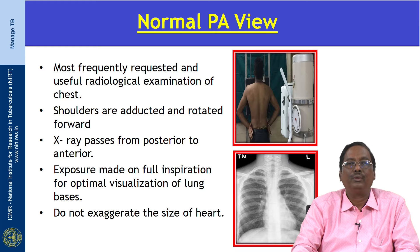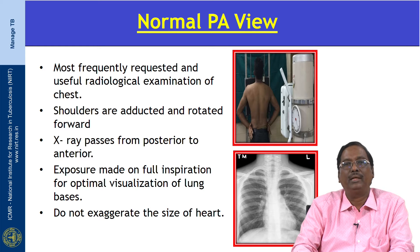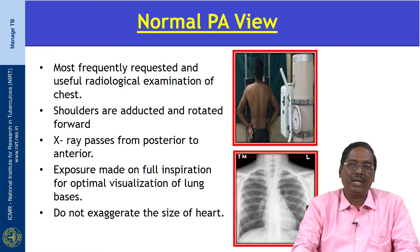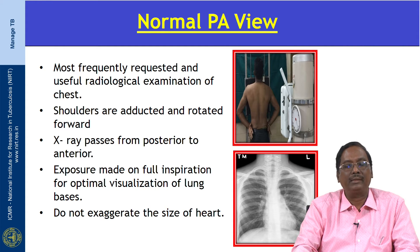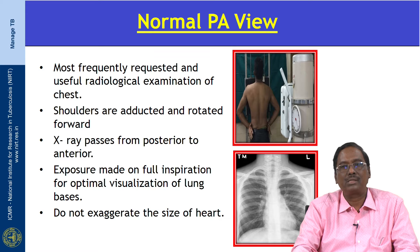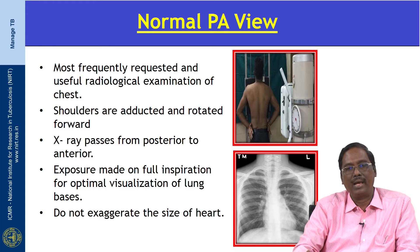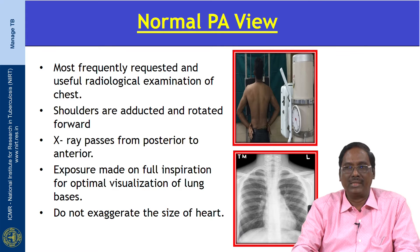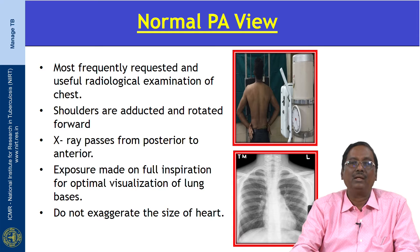This is a normal PA view — it is the most frequently requested and useful radiological examination of the chest. The patient is made to stand erect and the shoulders are adducted and rotated forward to displace the scapula away from the lung fields. The X-ray passes from posterior to anterior and the exposure is made on full inspiration for optimal visualization of the lung bases. The PA view does not exaggerate the size of the heart.